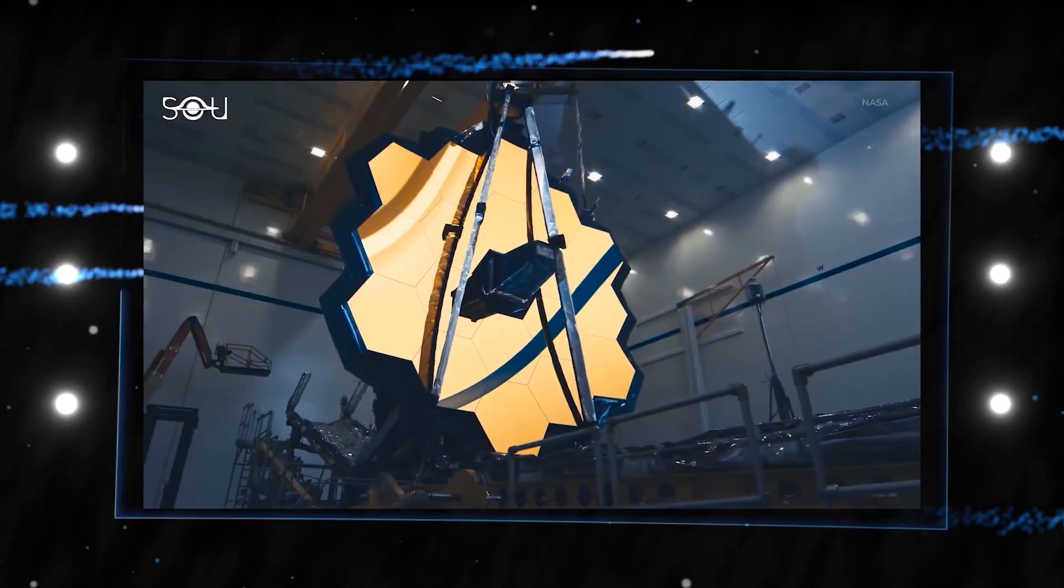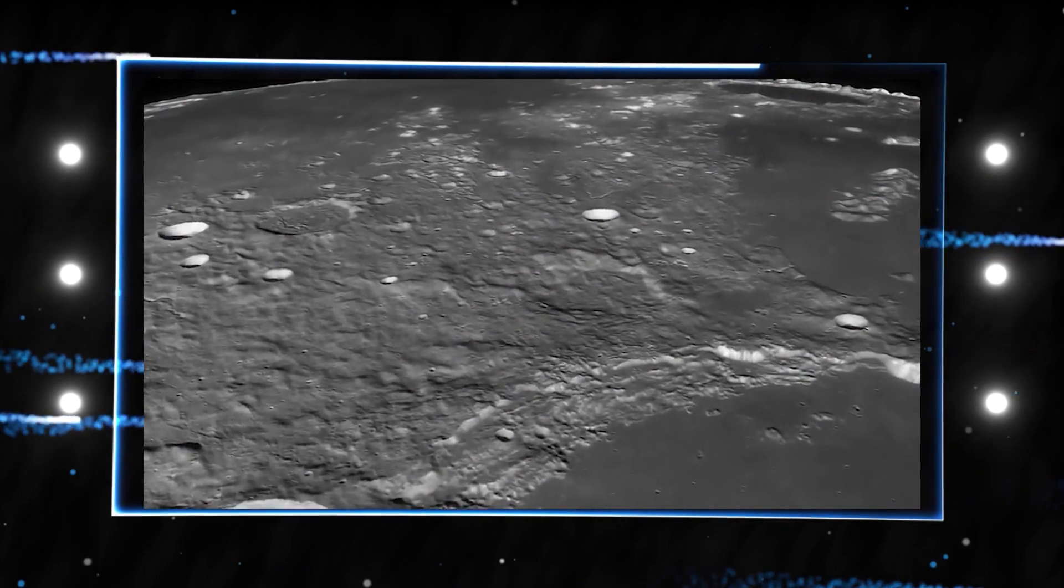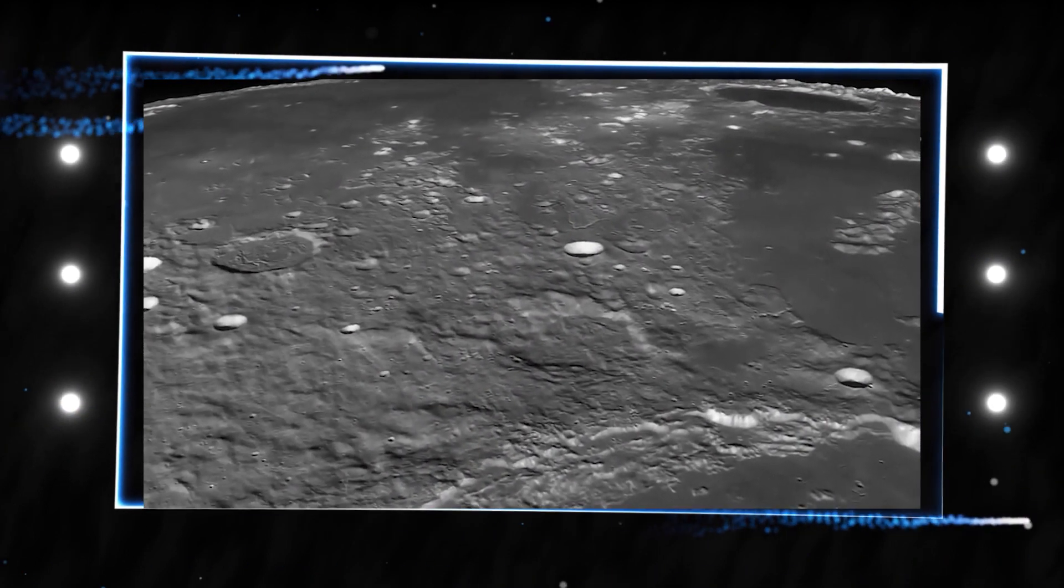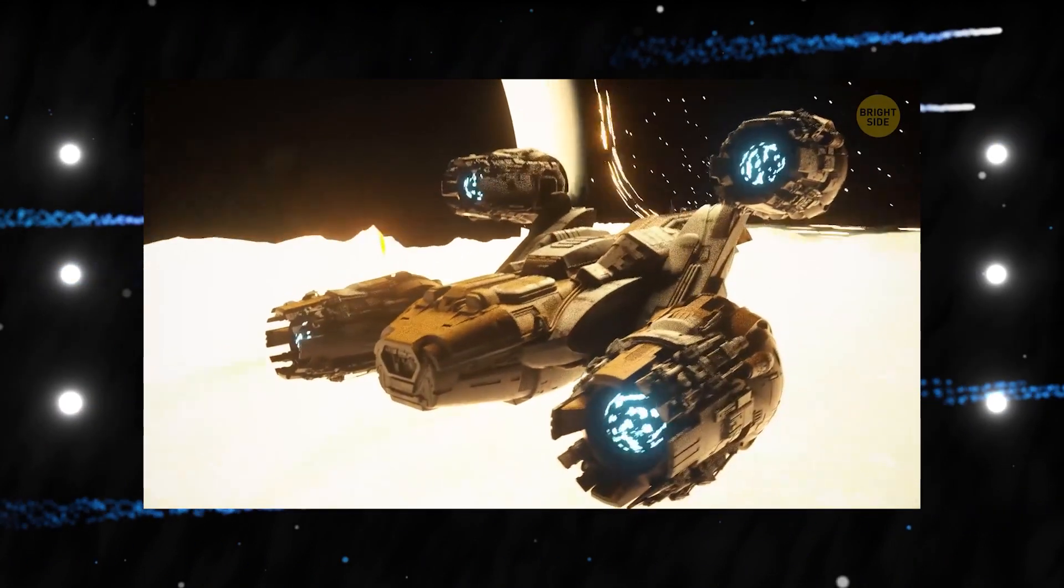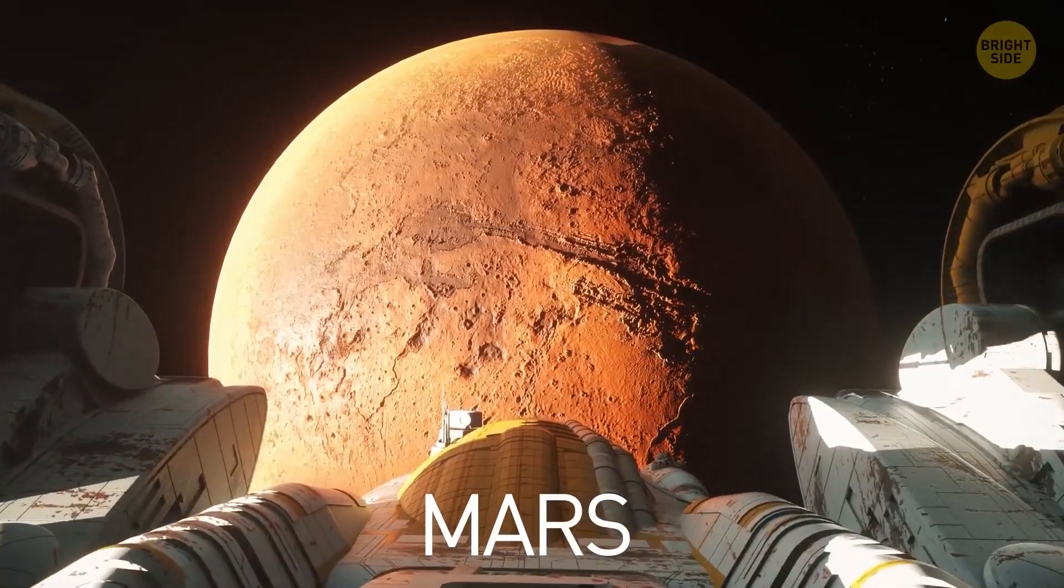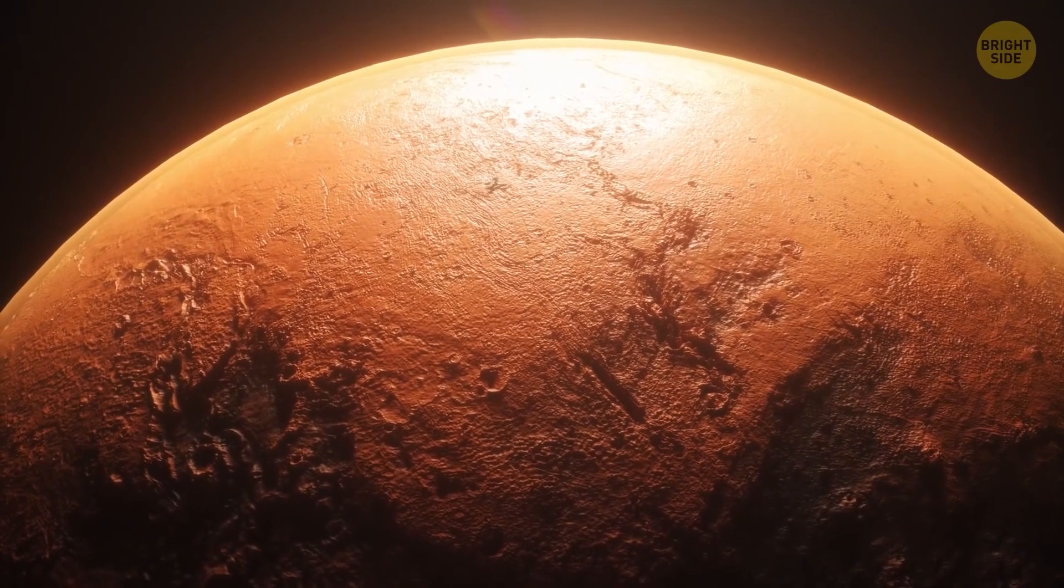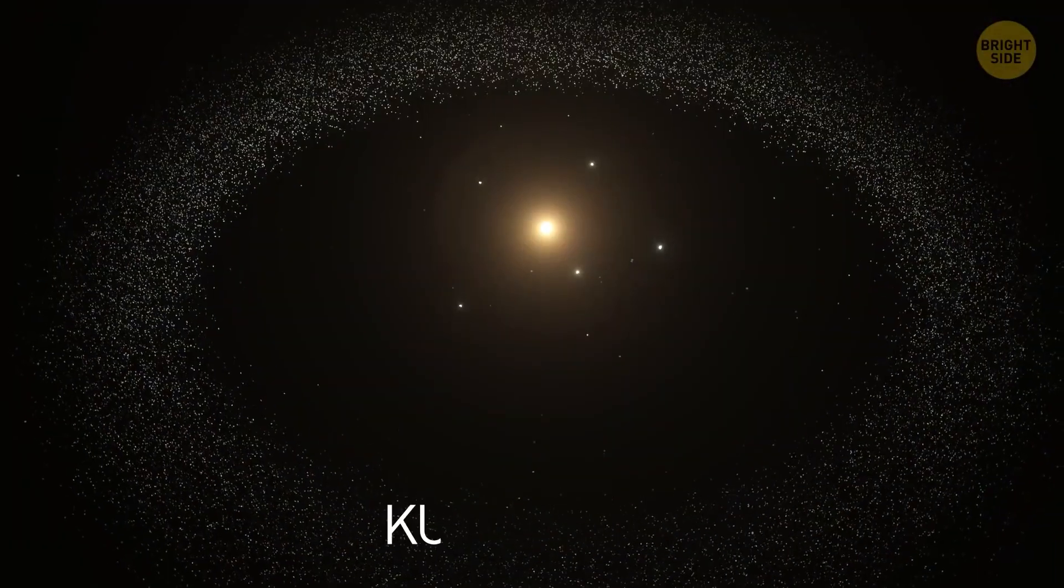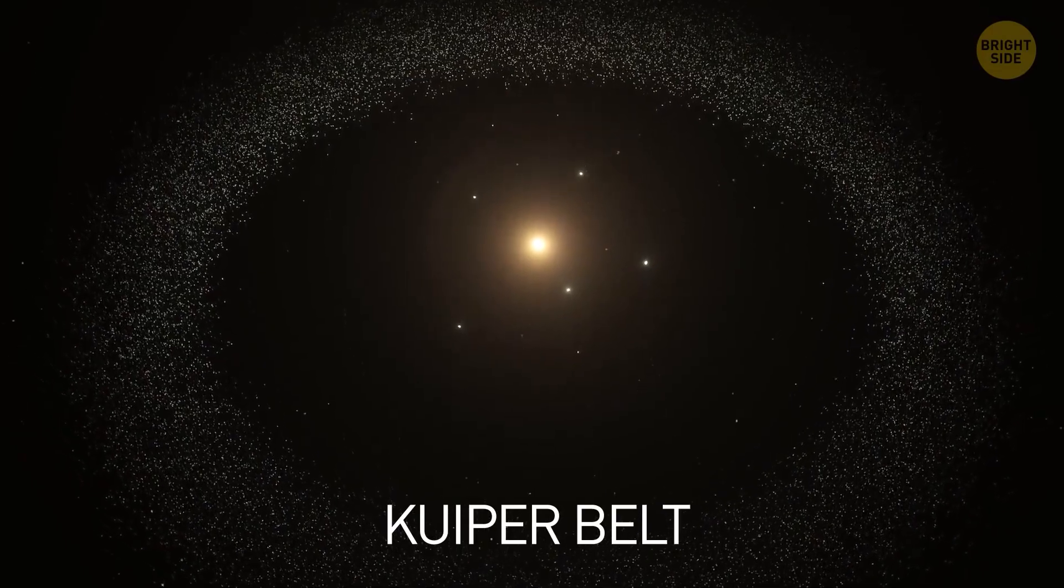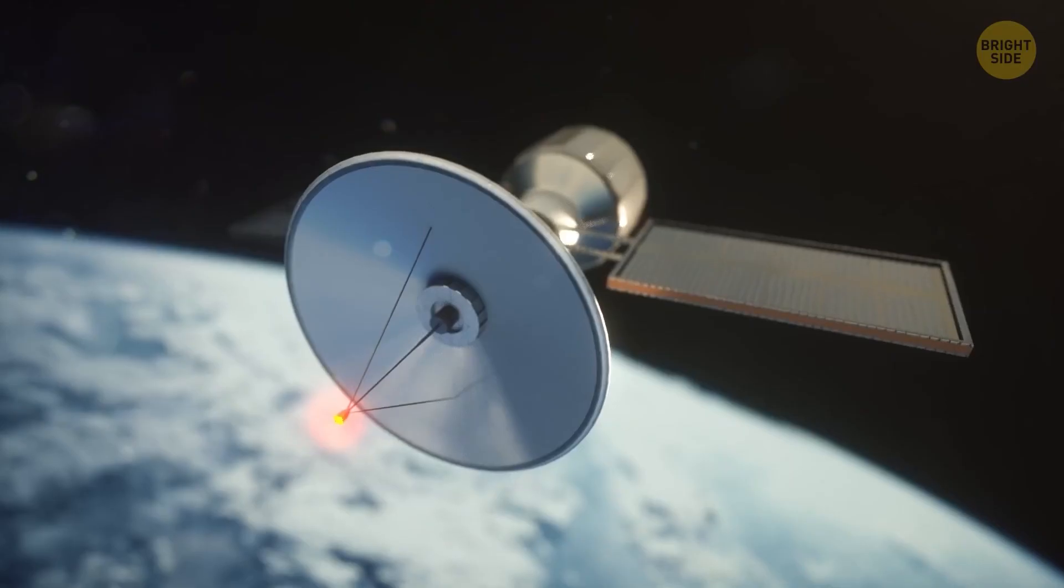Chinese scientists have discovered a significant finding on the Moon that might vault their nation into a select group of nations that includes only the US and Russia. This development comes at a time when the space race between China and the US is heating up. According to Xinhua News Agency, the CNSA and the CAEA jointly announced on September 9 that researchers investigating samples brought back from the Moon by China's Chang'e-5 mission had found a new lunar mineral.